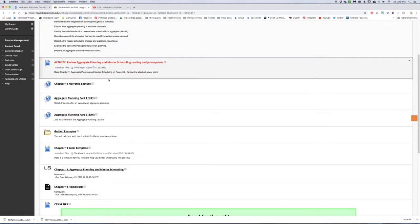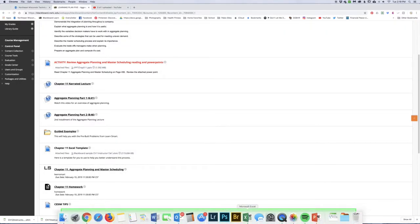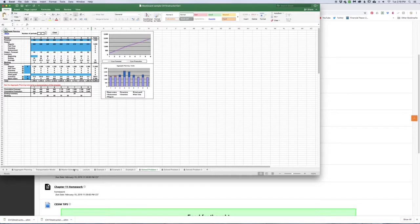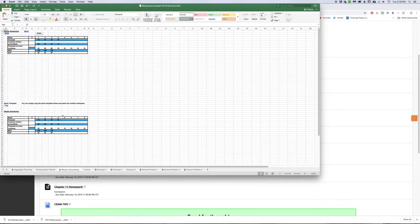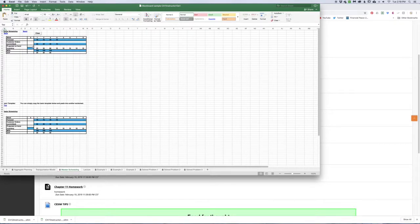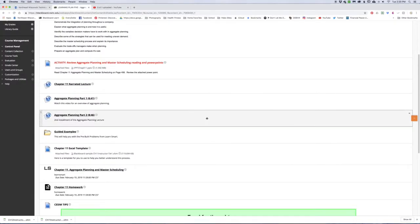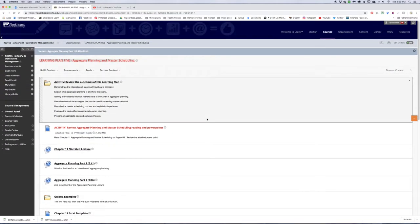The spreadsheet also has a master scheduling model. If you want to take a look at the problems and figure that out, you can use this template to put in your master production schedule and your committed orders, and it'll calculate everything in white. That's there for you to work through as well.